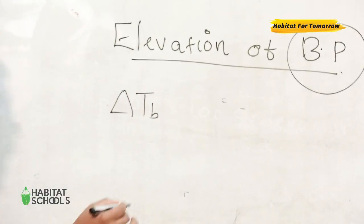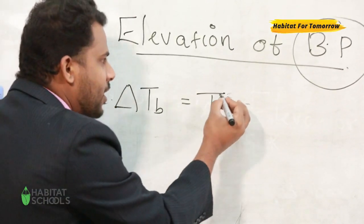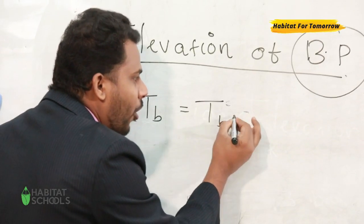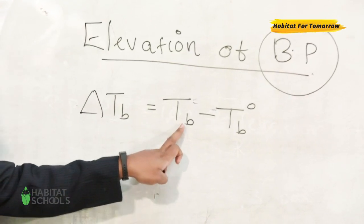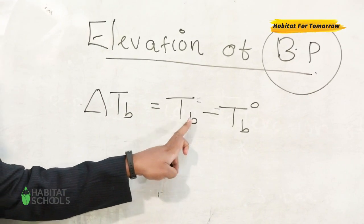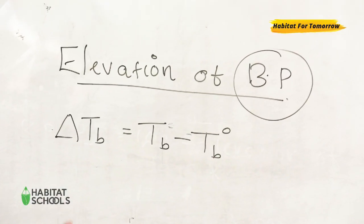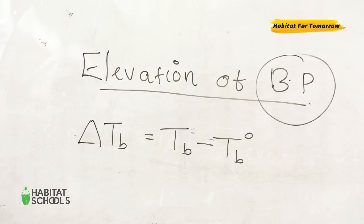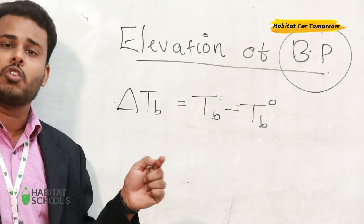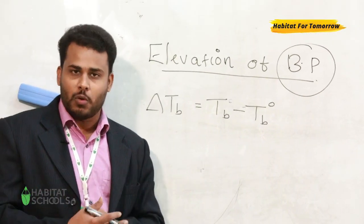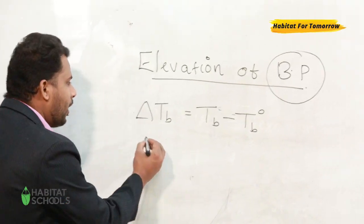The elevation in boiling point is represented using the symbol ΔTb. It is the temperature difference between the boiling point of the solution and that of the pure solvent. The boiling point of the pure solvent is represented as T⁰b. So ΔTb is defined as the temperature difference between the boiling point of the solution and the boiling point of the pure solvent.